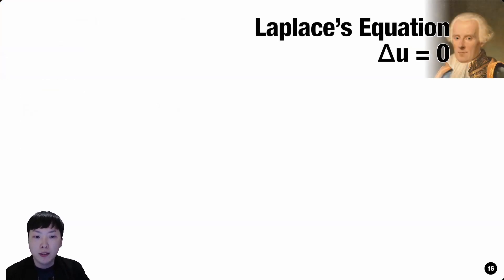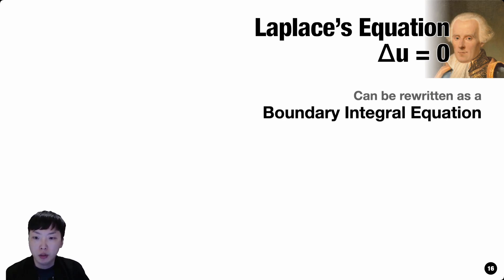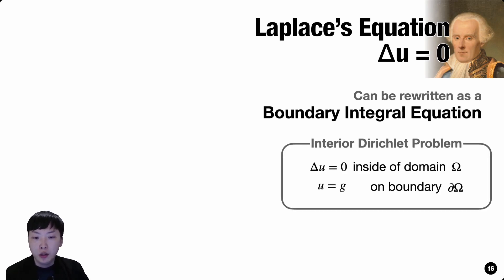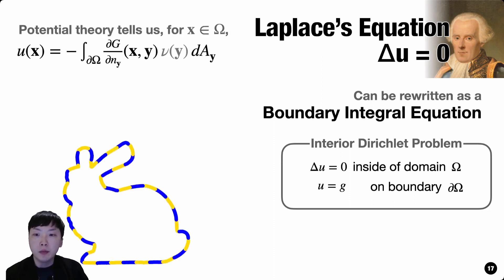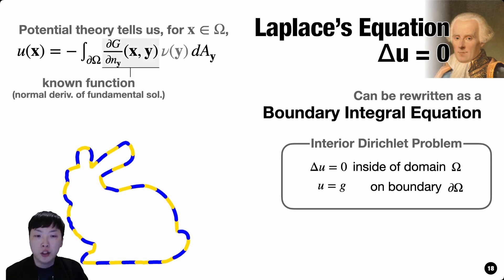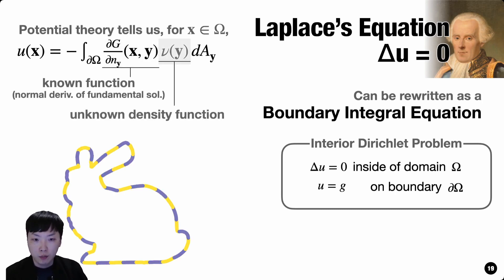The equation we want to solve is a Laplace equation, a very common PDE: Laplace u equals 0. We can rewrite it as a boundary integral equation. As an example, let's see how it is possible for the interior Dirichlet problem. The solution satisfies Laplace u equals 0 inside the domain while conforming to a prescribed boundary value g on the domain boundary. Potential theory tells us we can write the solution u inside the domain as a superposition of the normal derivative of the fundamental solution with the unknown density function. This means that if there is a way to estimate the unknown density function, we can easily estimate the solution as well.